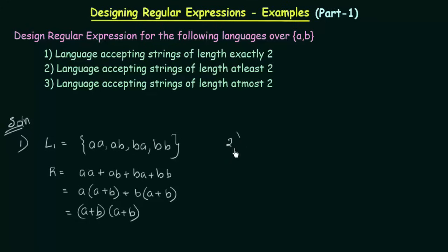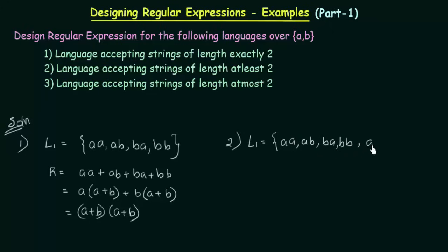Now let's do the second one — a language accepting strings of length at least 2. At least 2 means 2 or more than 2, so it could be AA, AB, BA, BB, AAA, and it continues. This will actually be an infinite set, because at least 2 means 2 or more — 2 is the minimum and the maximum is not specified.